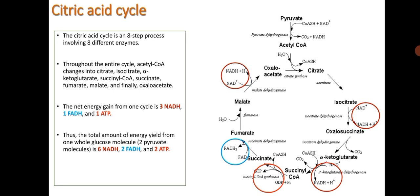The net energy gain from one cycle is 3 NADH, 1 FADH2, and 1 ATP. Thus, the total amount of energy yield from one whole glucose molecule, i.e. 2 pyruvate molecules, is 6 NADH plus 2 FADH2 and 2 ATP.